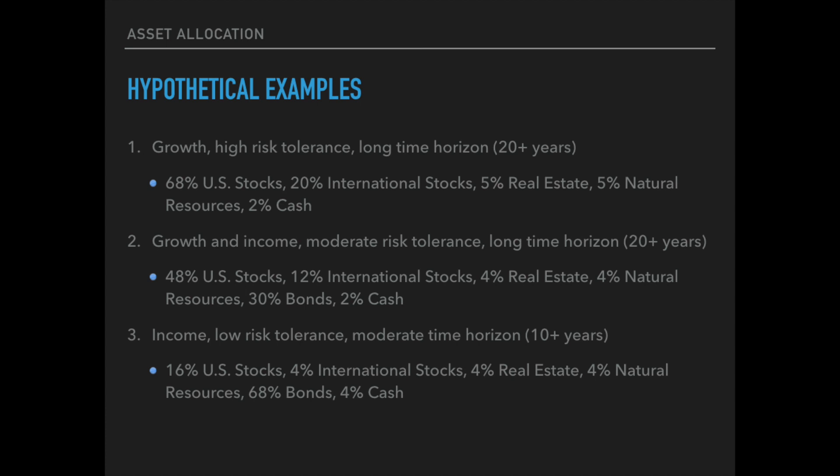In scenario number two, we have an investor whose objective is growth and income. They have a moderate risk tolerance and still a long time horizon of 20-plus years. This investor could have a portfolio with 48% U.S. stock, 12% international stock, 4% real estate, 4% natural resources, 30% bonds, and 2% cash. This is more conservative than scenario one, with 30% exposure to bonds and 2% cash, making it more of a growth and income type allocation.